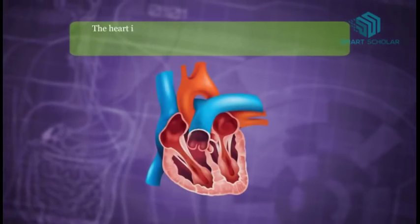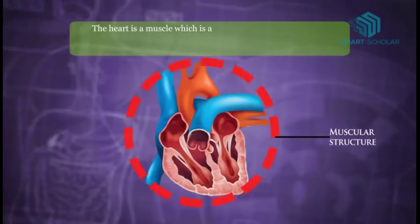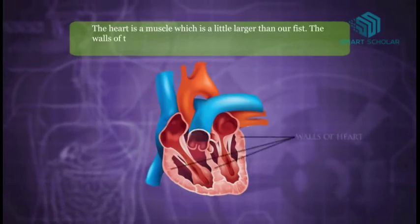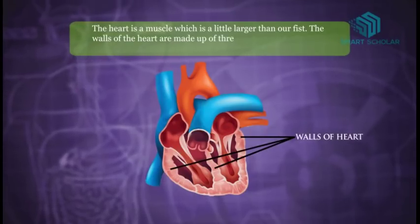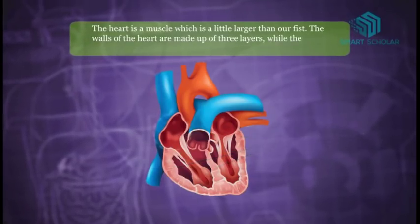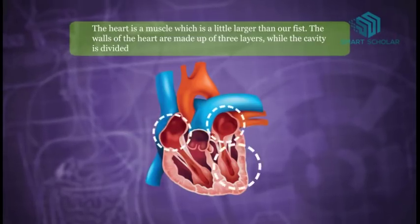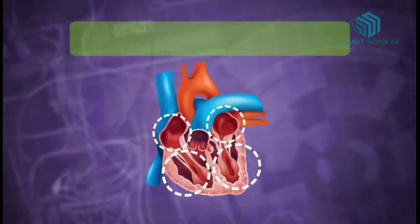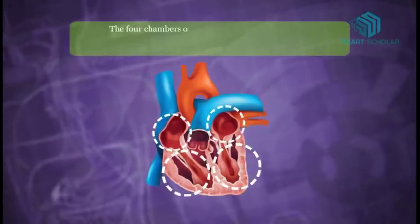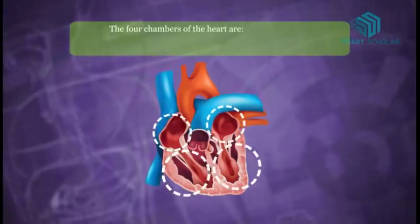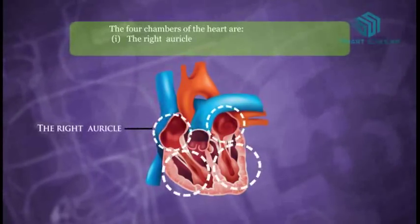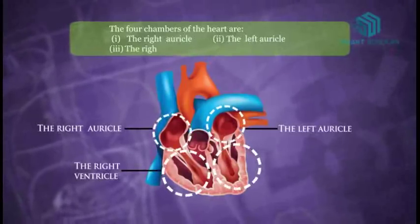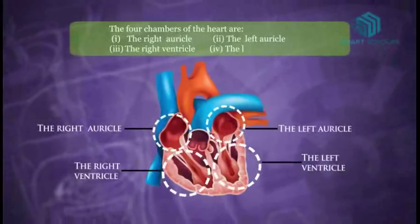The heart is a muscle which is a little larger than our fist. The walls of the heart are made up of three layers, while the cavity is divided into four parts. The four chambers of the heart are the right atrium, the left atrium, the right ventricle, and the left ventricle.